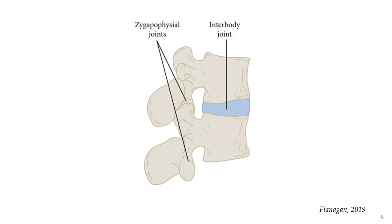As you can see in the diagram, the functional spinal unit is made up of three joints: the interbody joint, which is a symphysis, and the right and left zygapophyseal joints, which are planar gliding joints. The zygapophyseal joints are often referred to as facet joints.